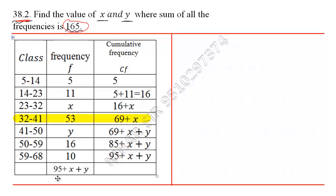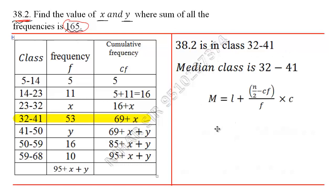So here we will write 32 to 41 is my median class because 38.2 is between 32 to 41. Now we will apply the median formula that we understood in the previous lecture. Median is 38.2.